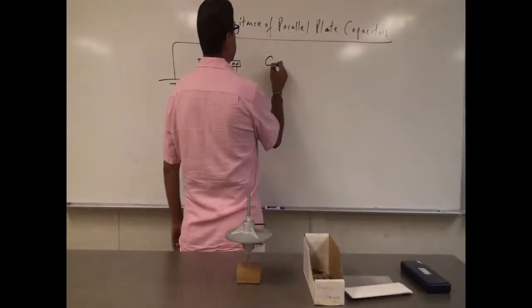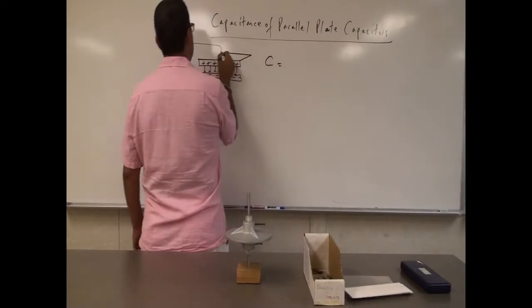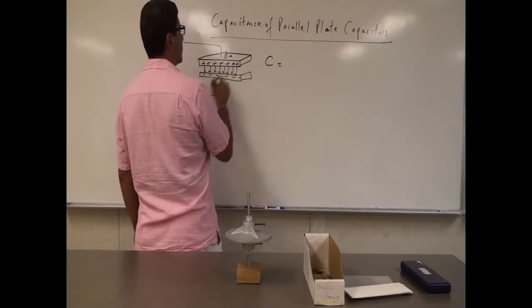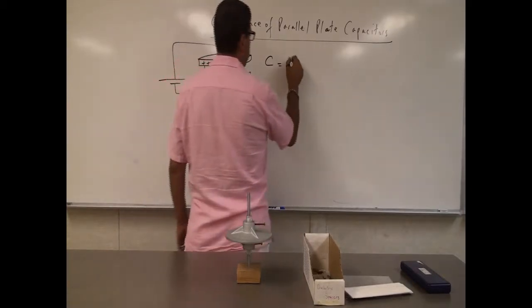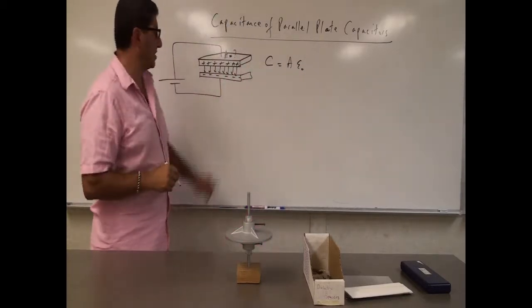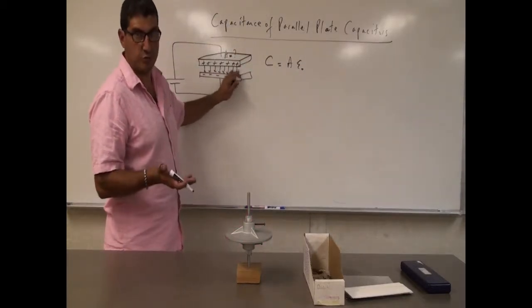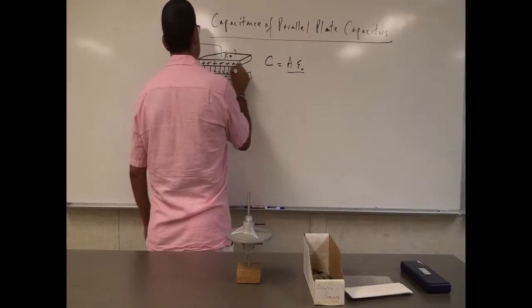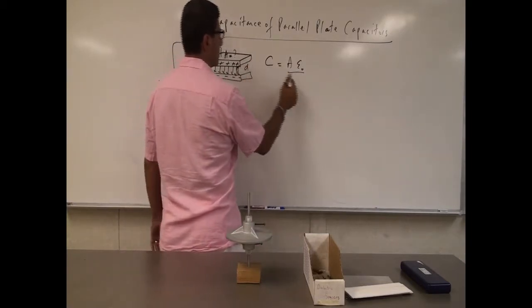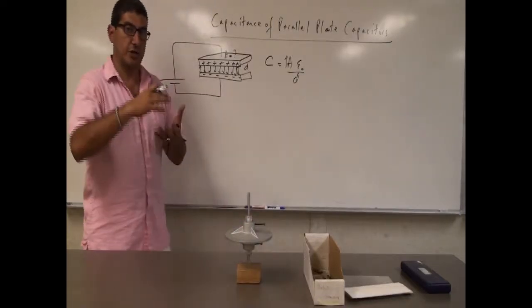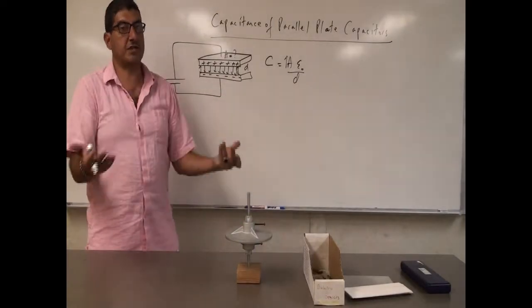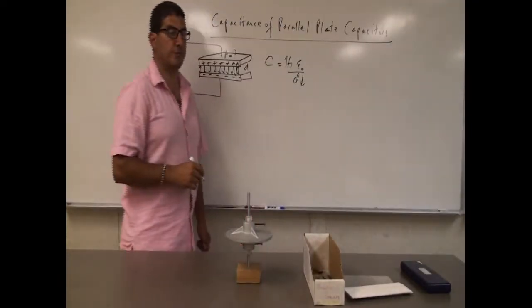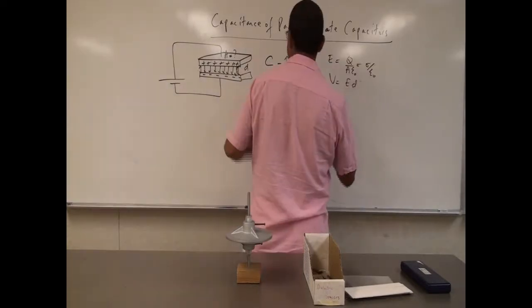In physics, we learn that the capacitance of a capacitor equals the area of each plate — we assume both plates have the same area — multiplied by the electrical permittivity of the space in between, which is vacuum or air (we assume they're about the same), divided by the distance between the two plates. The bigger the area of each plate, the more charge it can store, so the bigger the capacitance. The smaller the distance between the plates, it's also a better capacitor.